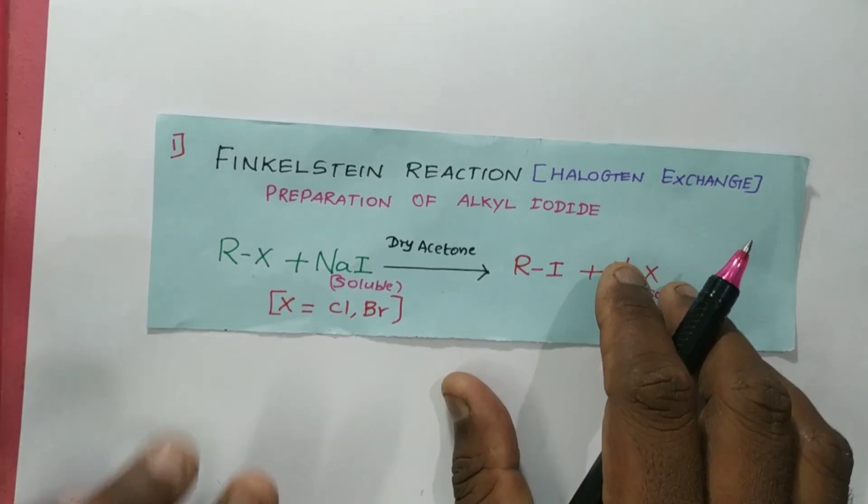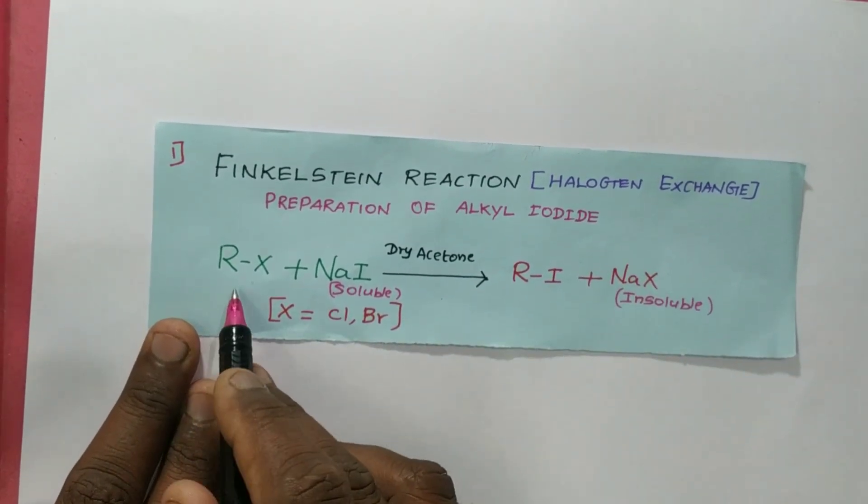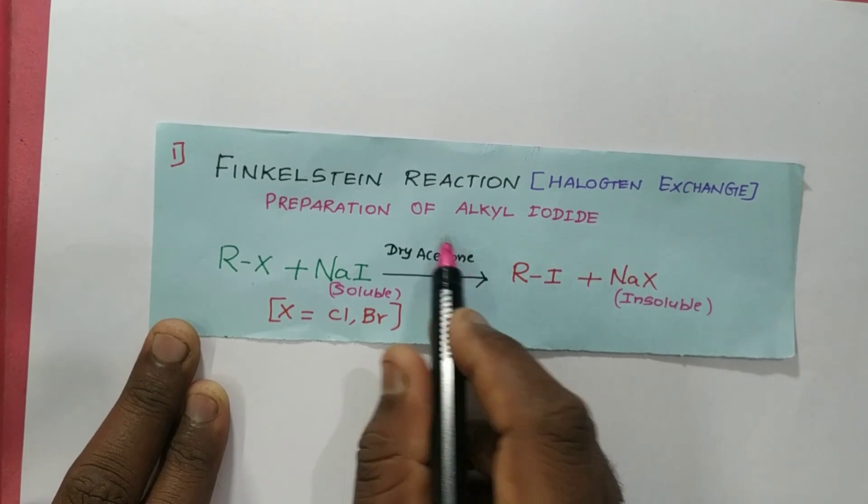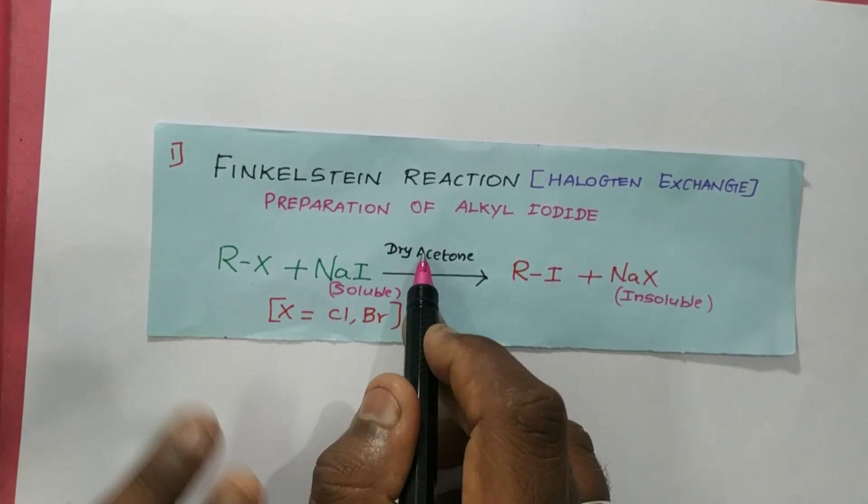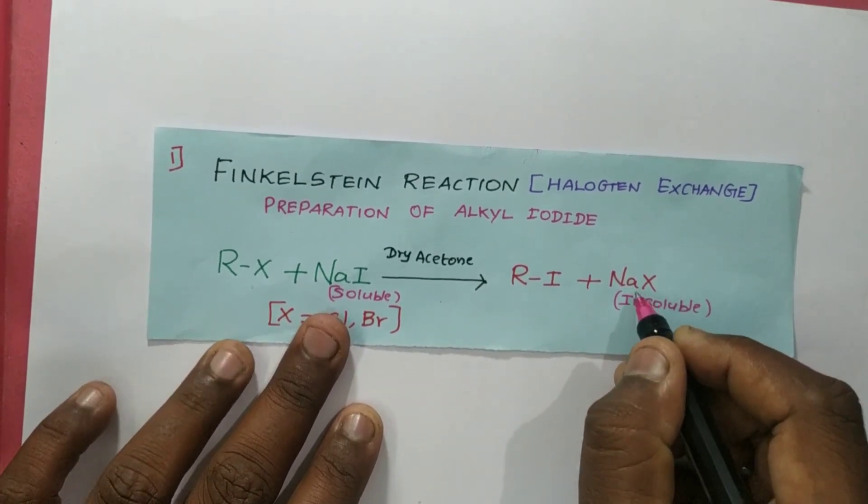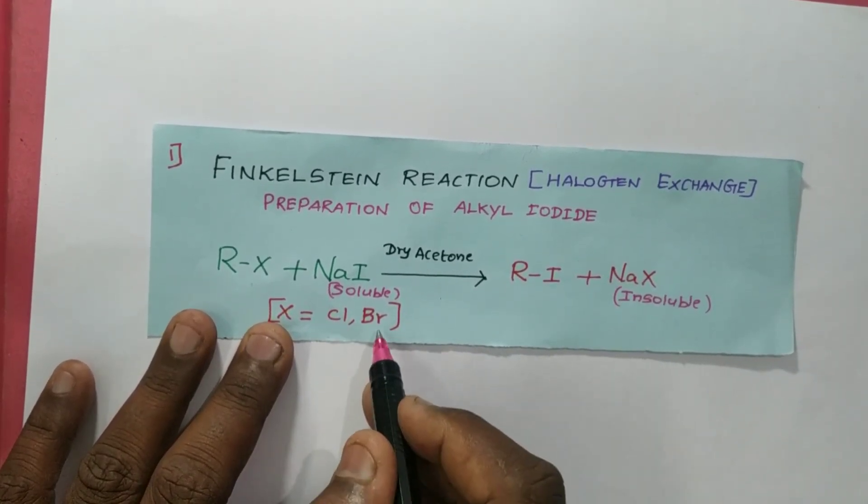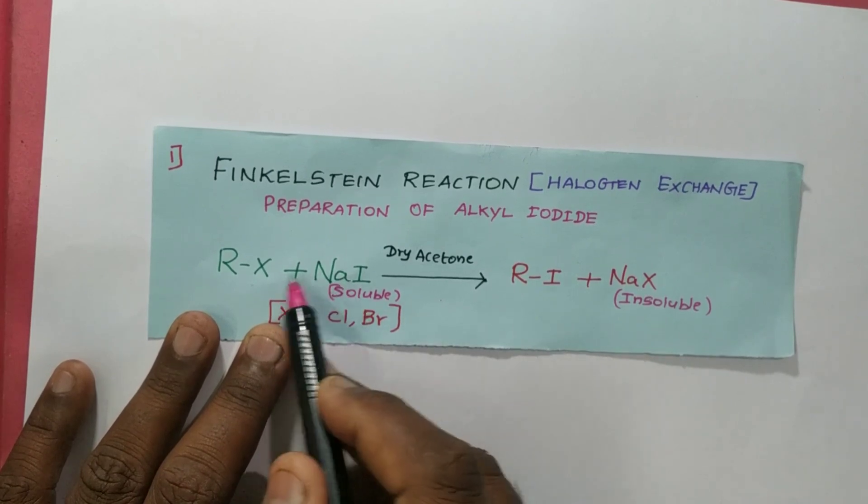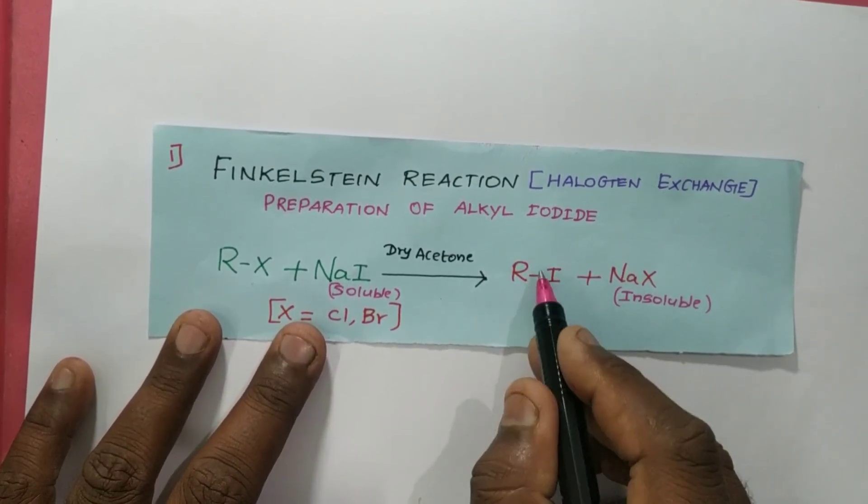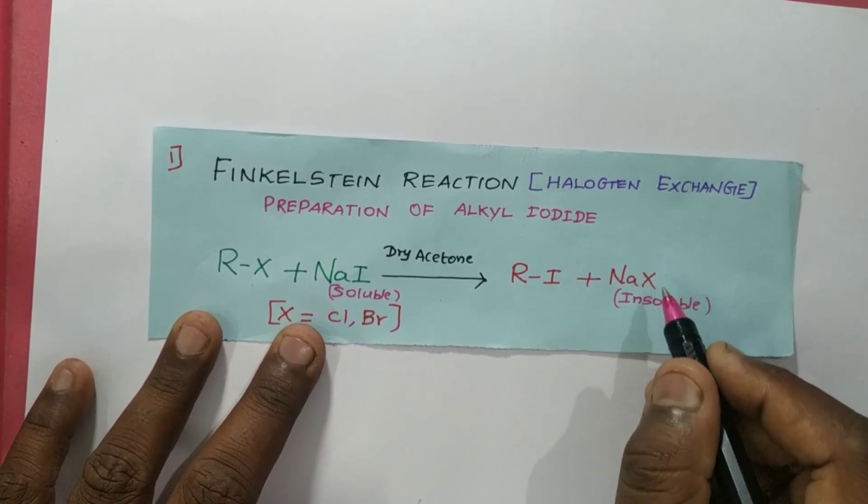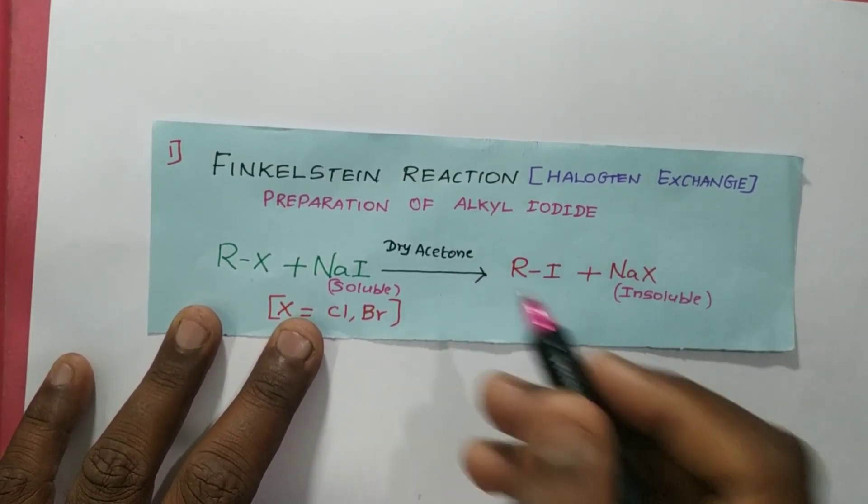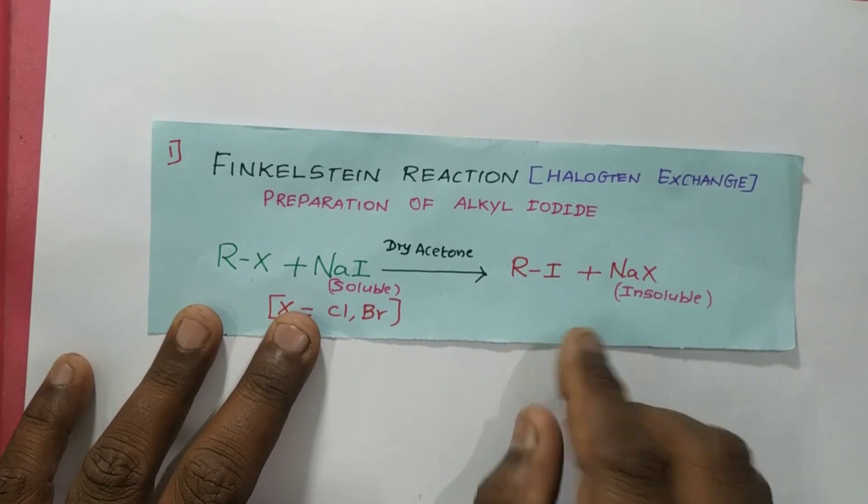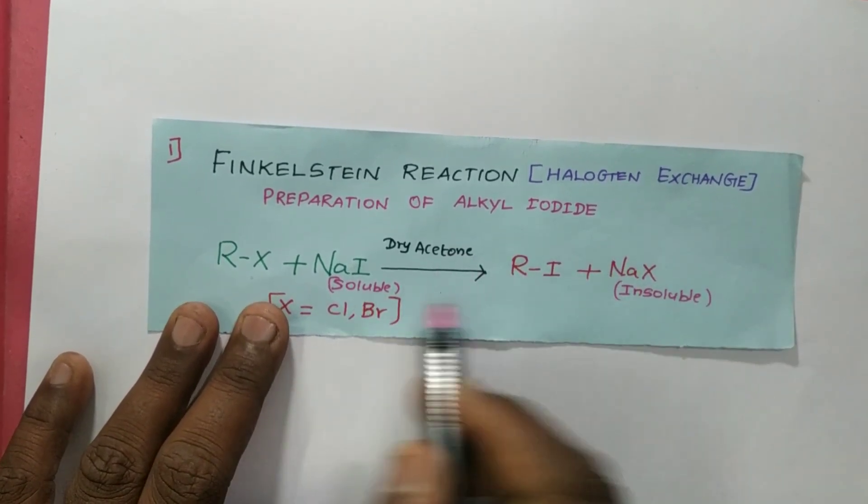Let's see the reaction. For example, if I'm taking alkyl halide R-X reacting with sodium iodide in presence of dry acetone, the sodium iodide is soluble, but the formed product here is sodium halide, that may be sodium chloride or bromide. If you are taking alkyl chloride or alkyl bromide, both can exchange and form alkyl iodide R-I along with sodium chloride or bromide that are insoluble in acetone.